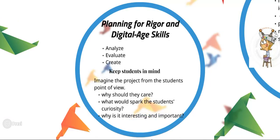Chapter 3 also talks about planning for rigor and digital age skills — analyze, evaluate, and create. When making your project, you want to analyze it: examine, explain, investigate, and characterize what you're looking for. Then evaluate your project plan, meaning to judge, select, decide, and justify if it's good for what you're trying to teach. When creating your plan, you want to anticipate what might happen, adapt, and combine different models together.